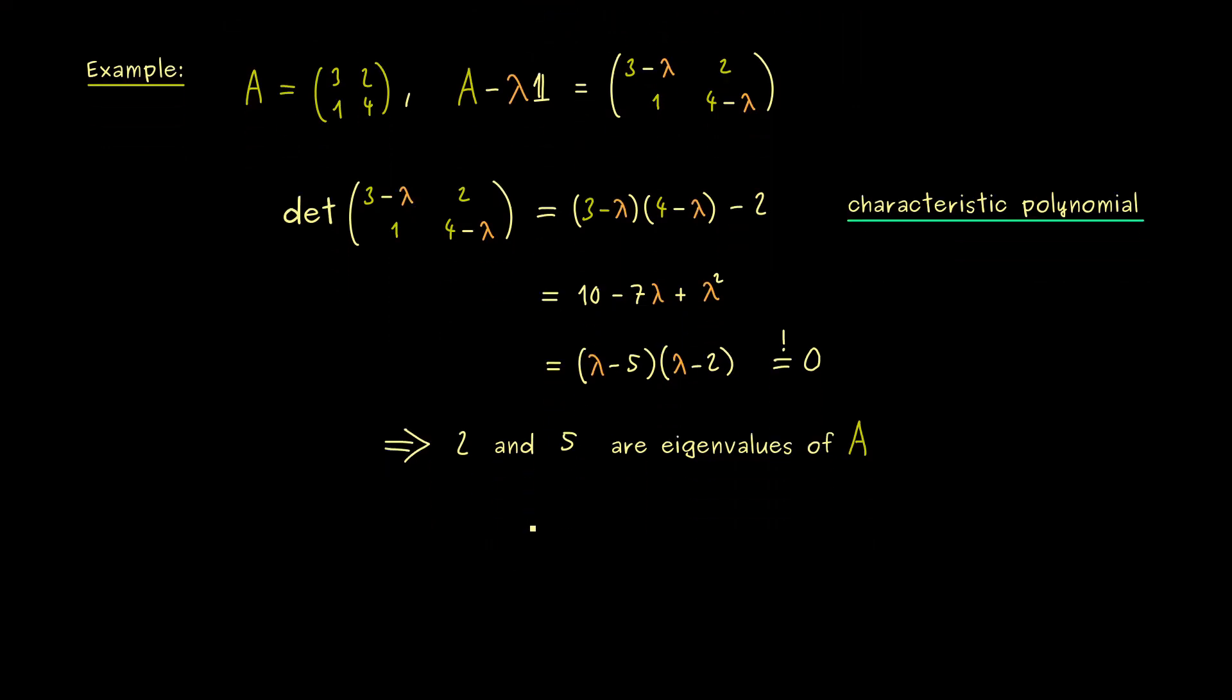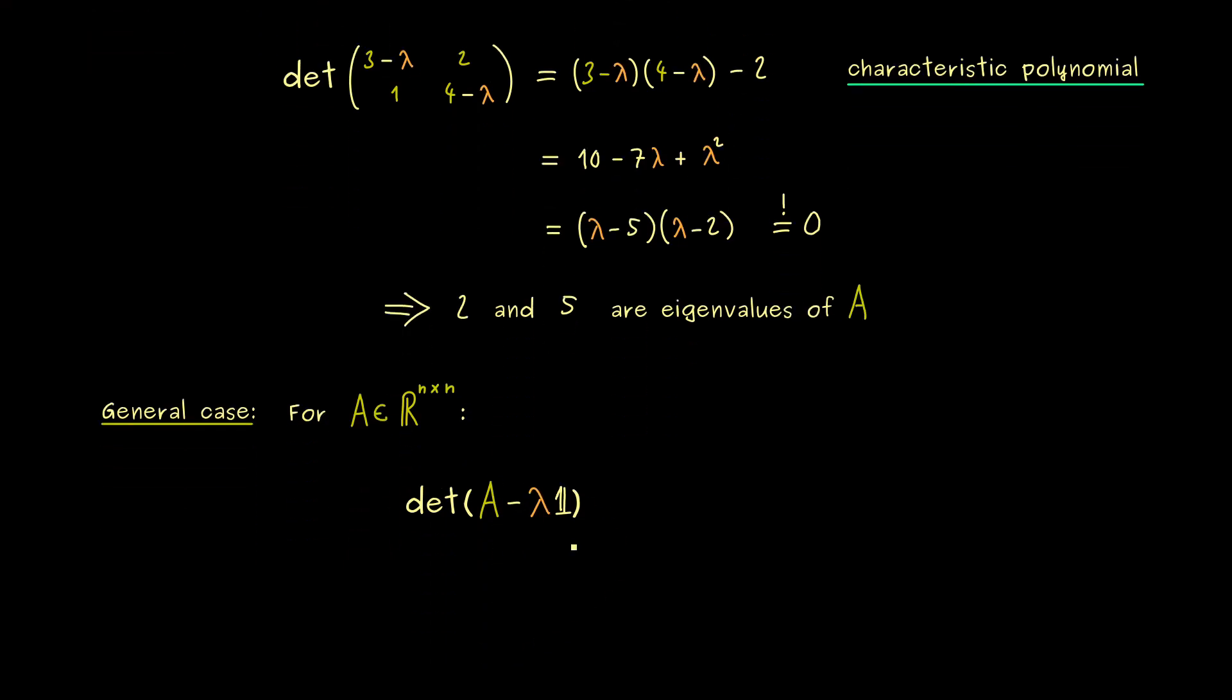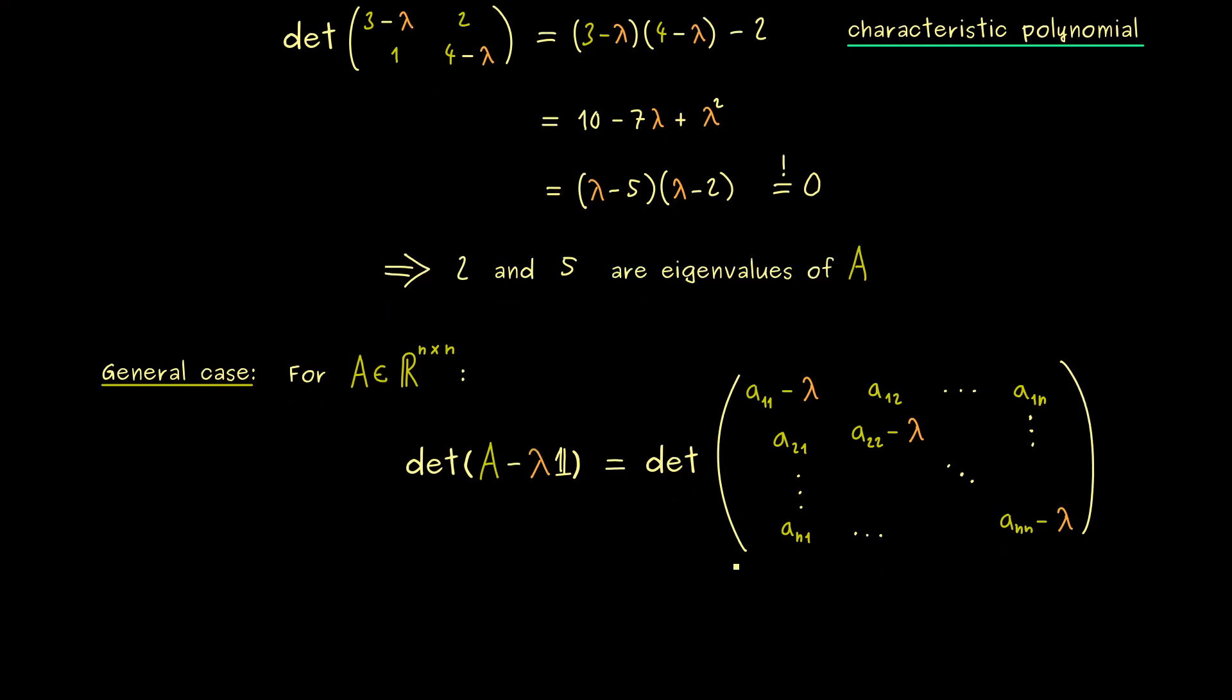And now I would say, with this example in mind, we can go to the general case. So this means we want to know how the determinant looks in the n times n case. Therefore, let's calculate the determinant A minus λ identity. And of course, this is now the n times n identity matrix. Therefore, this implies that we have to subtract λ on the diagonal again. So in the first component, we have A_11 minus λ. So the whole diagonal looks like that. But we don't change the other entries. This is always important to remember, because in calculations a lot of mistakes can happen.